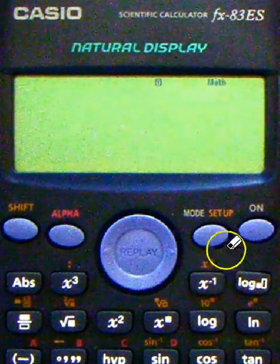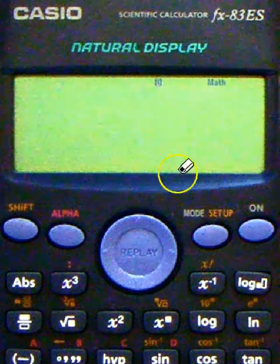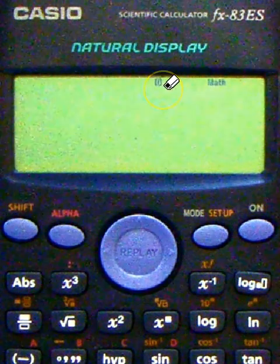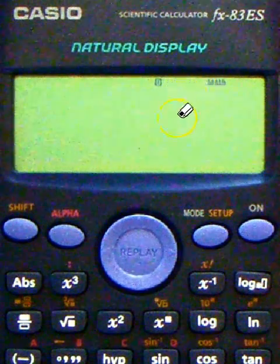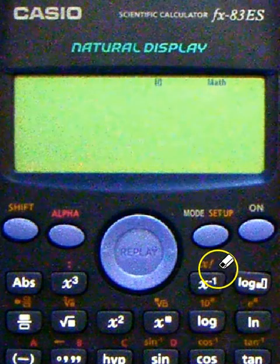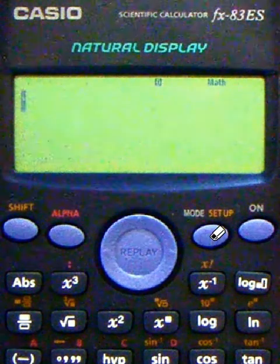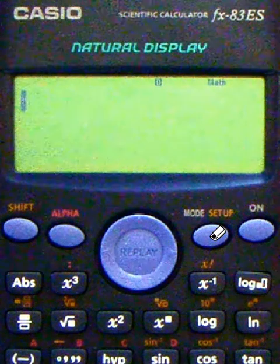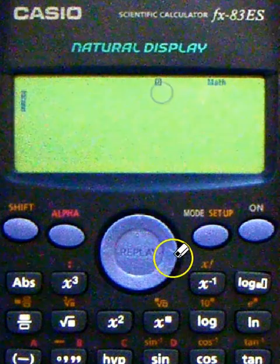Before you start using the scientific calculator though, you want to make sure that you're in degree mode, which is shown up here. You can see it there, that's degree mode. If you don't see the little D up here, just keep pressing that button there and you'll eventually display degree mode up on the screen.